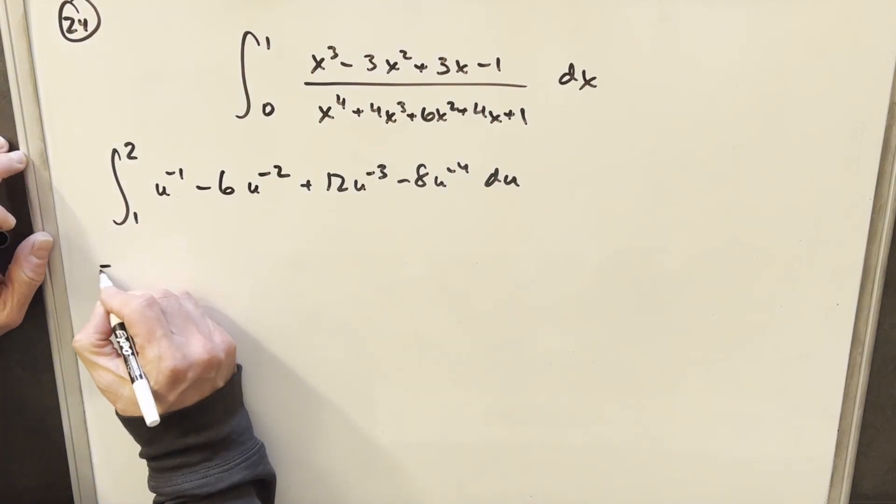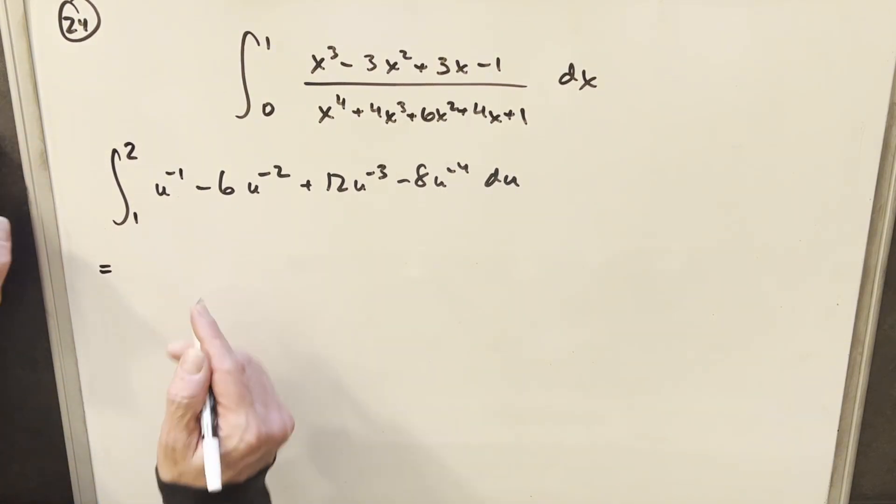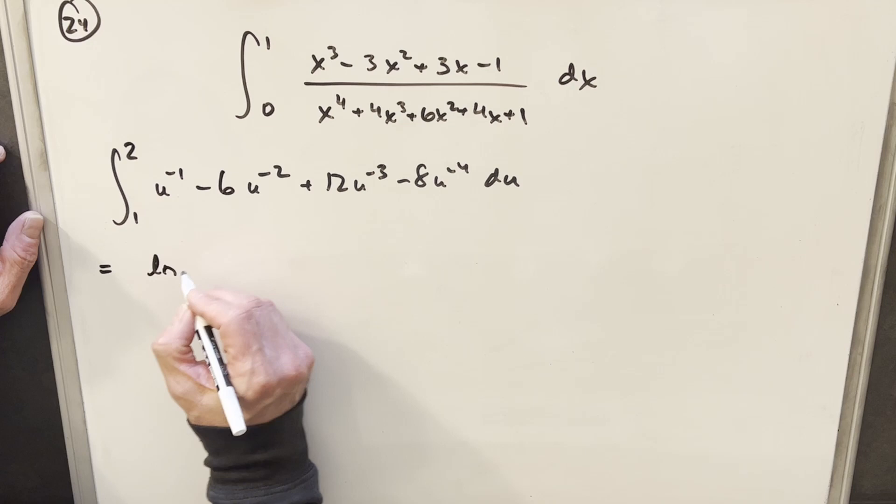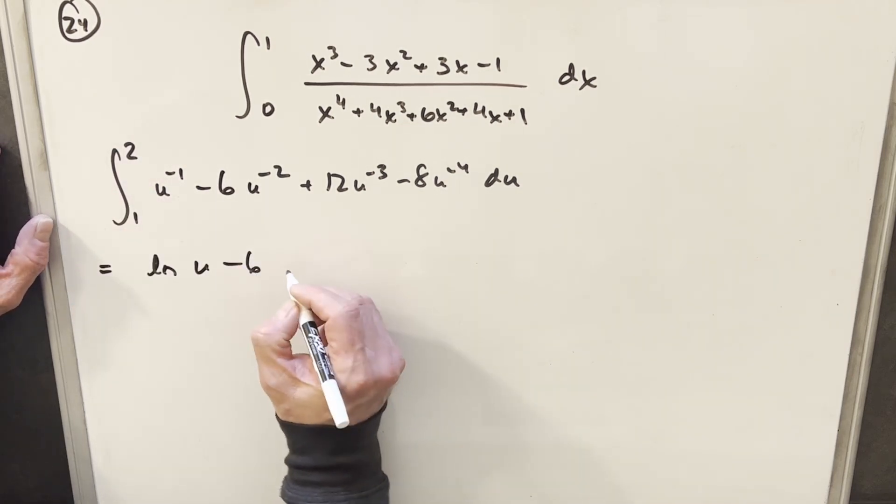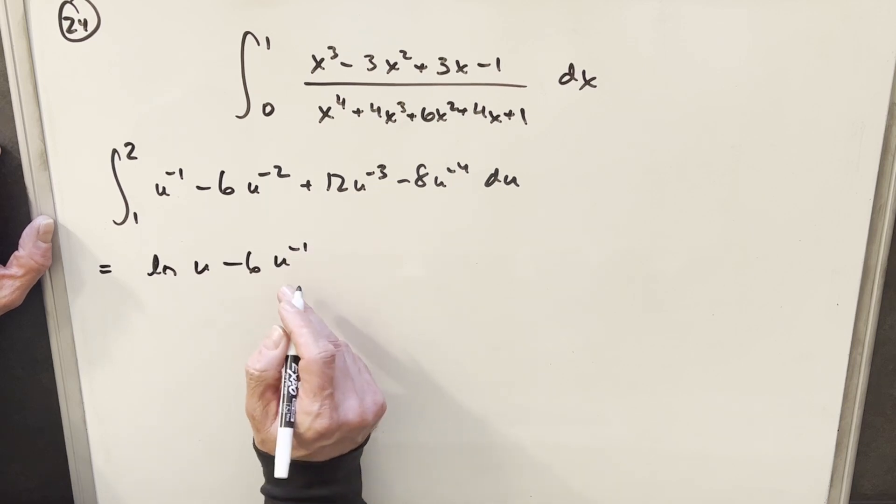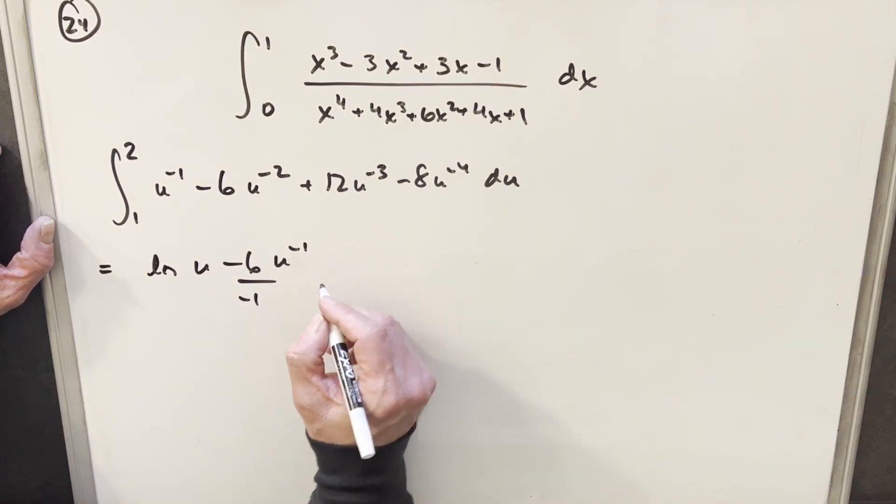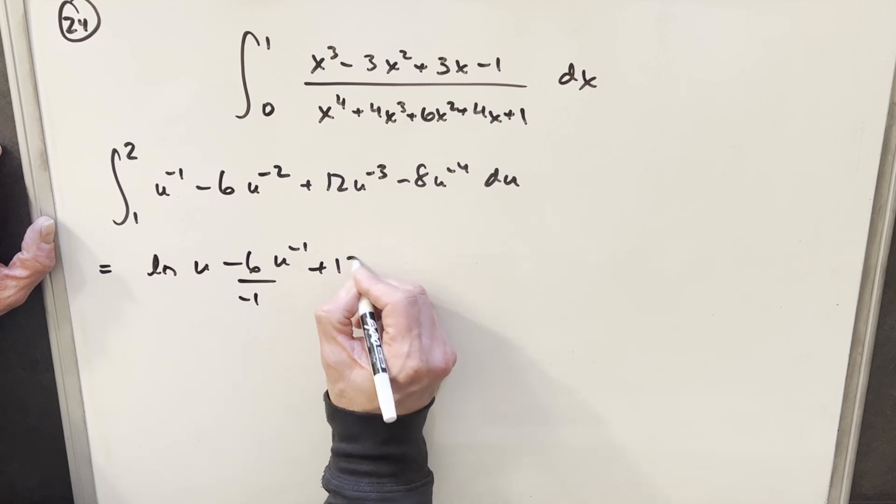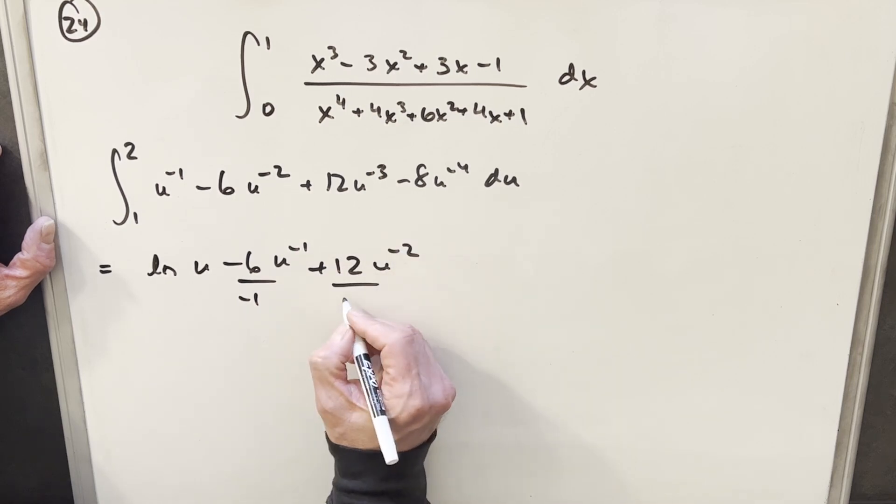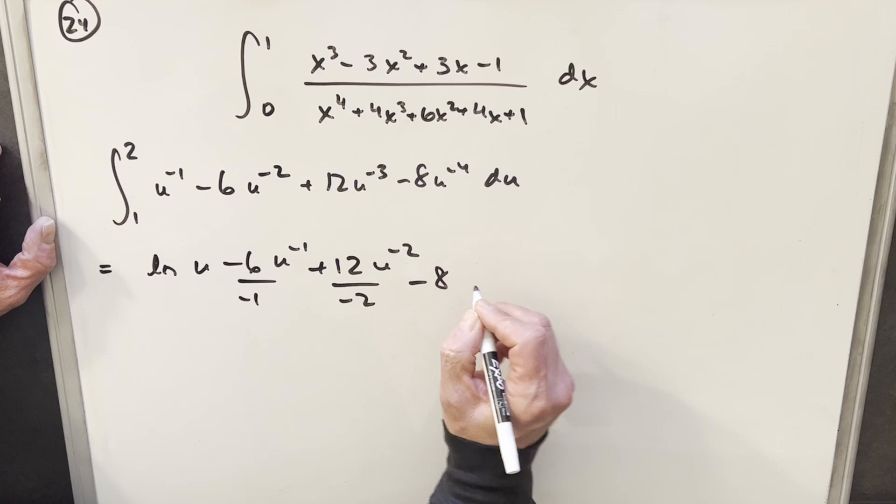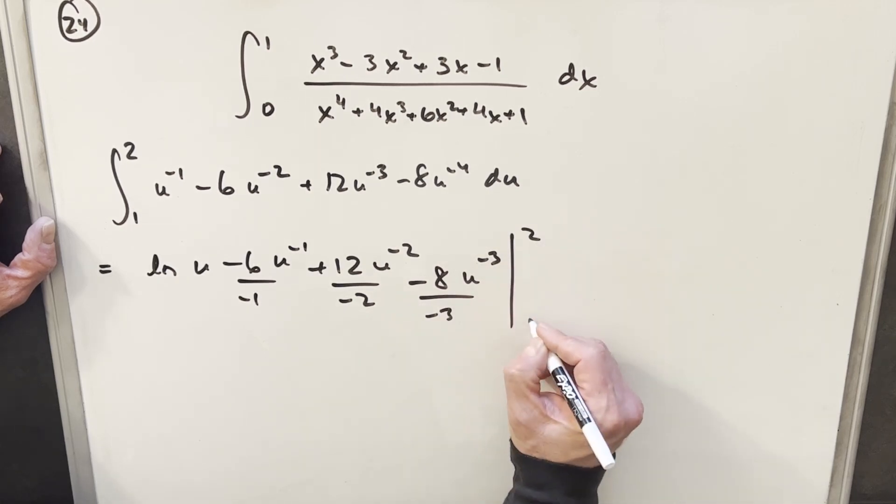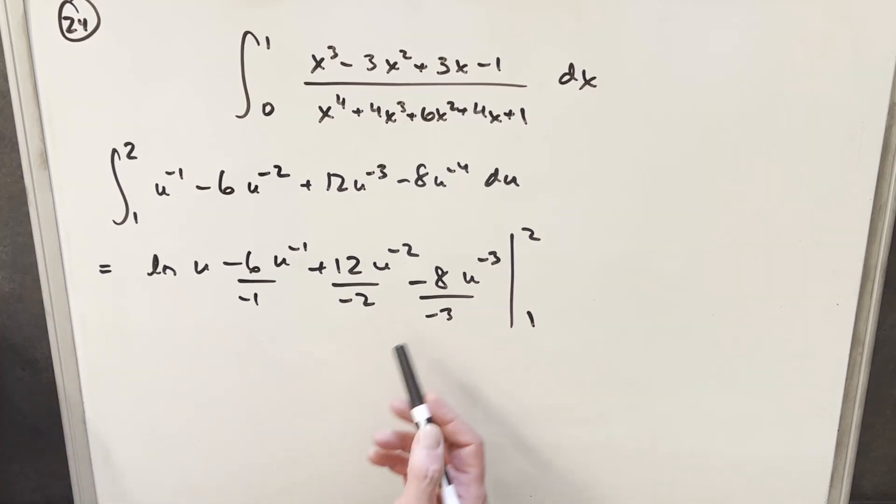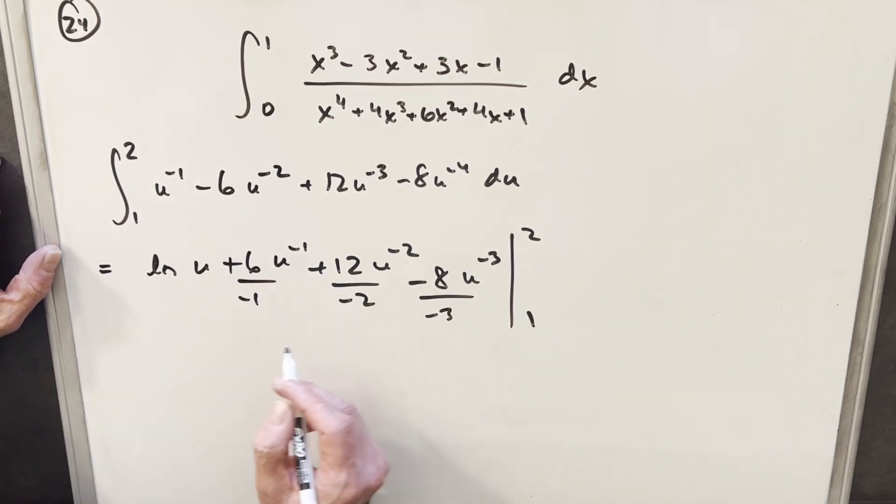Okay, so next we're just going to integrate this thing. So first, this is 1 over u, so we're going to have natural log of u, but I'm going to drop the absolute value because we notice our bounds are positive. Then here we're going to have minus 6 u minus 1, bring down a minus 1, just using power rule. We'll just do that here as well, and more power rule, minus 3 over minus 3, and we have to put in our bounds. Then before we continue, I'm just going to clean up my coefficients here just to make this easier. So we're going to have plus 6 there.